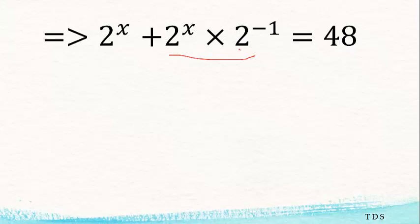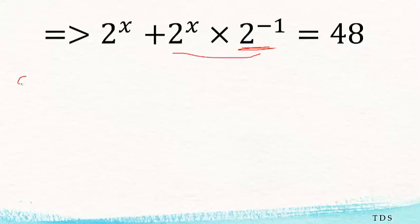Now we know that a to the power minus 1 is the same as 1 over a. So meaning that 2 to the power minus 1 is the same as 1 over 2. We're going to change 2 to the power minus 1 to 1 over 2.